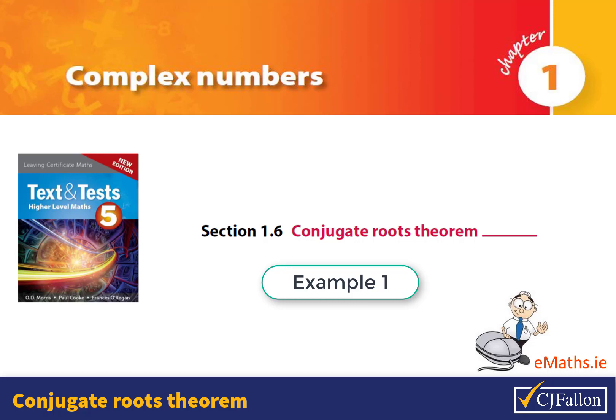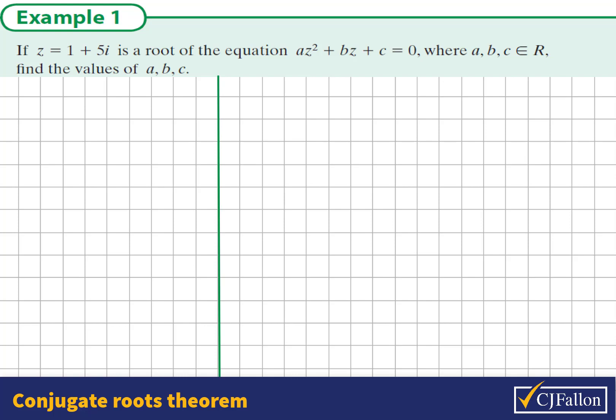Conjugate Roots Theorem, Example 1. If z equals 1 plus 5i is a root of the equation az squared plus bz plus c equals 0, where a, b, and c are all real numbers, find the values of a, b, and c.